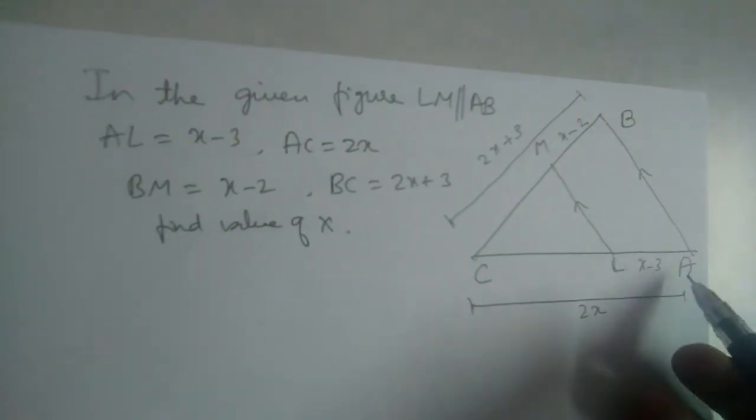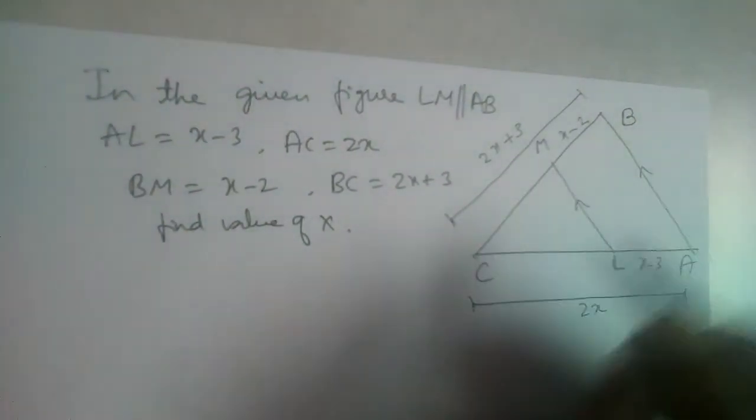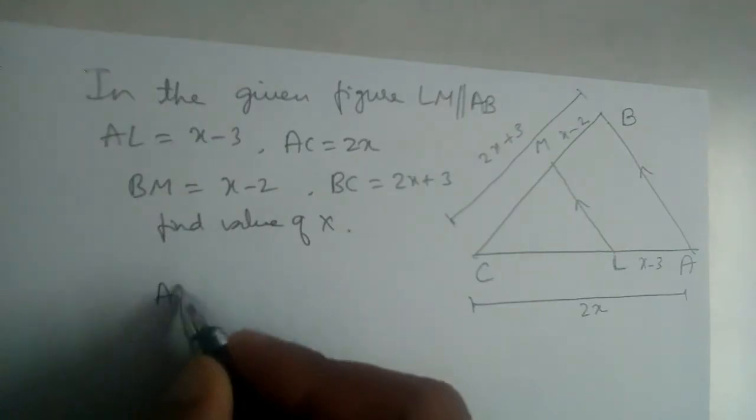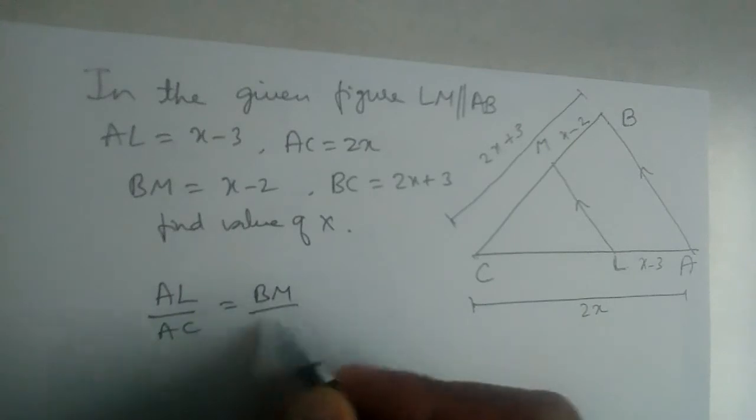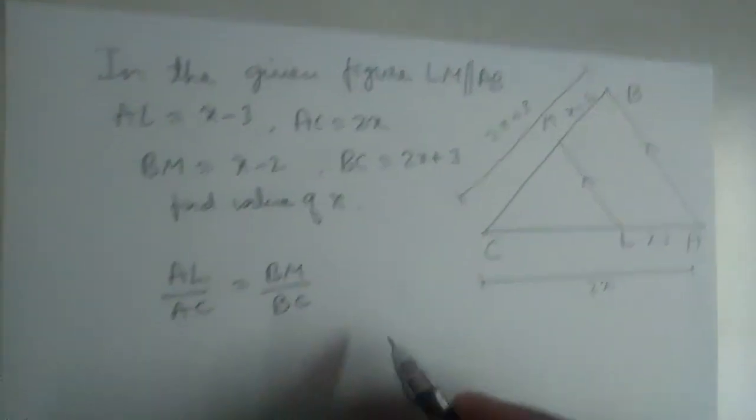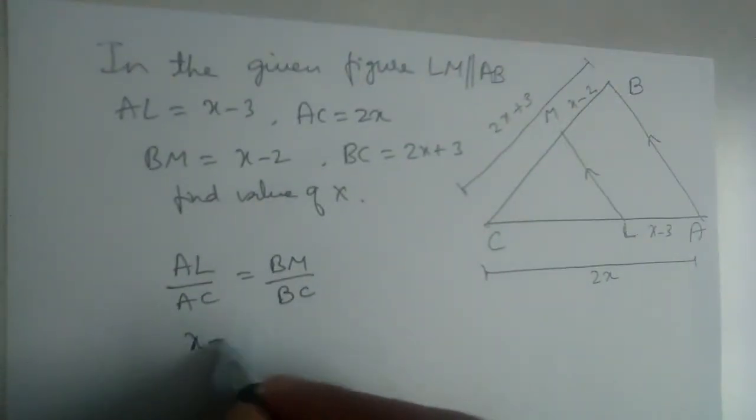So given LM is parallel to AB, right? So by BPT, AL by AC will be equal to BM by BC. Let us substitute the values. AL is x minus 3 divided by AC, which is 2x, is equal to BM, x minus 2, divided by 2x plus 3.